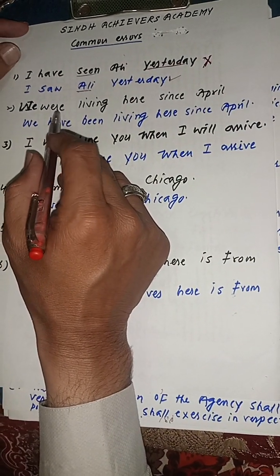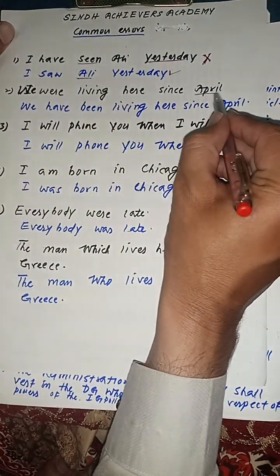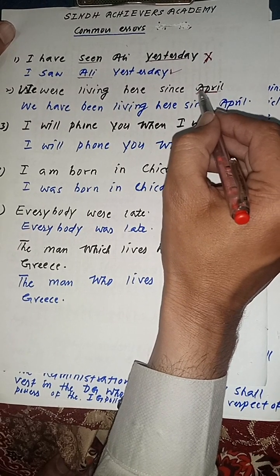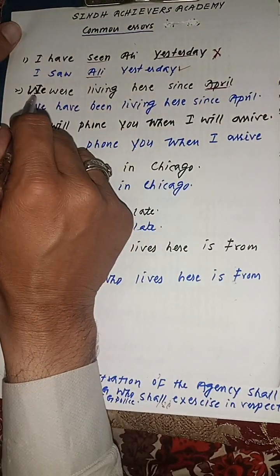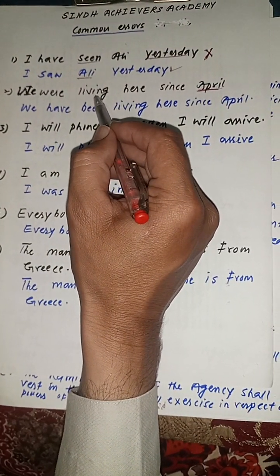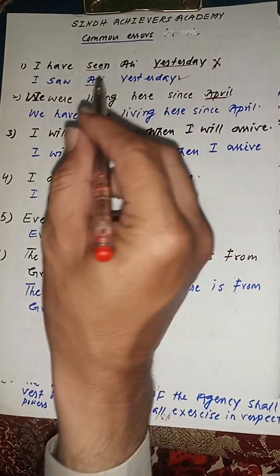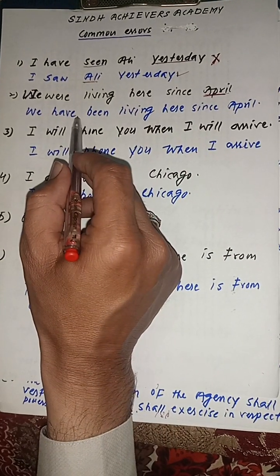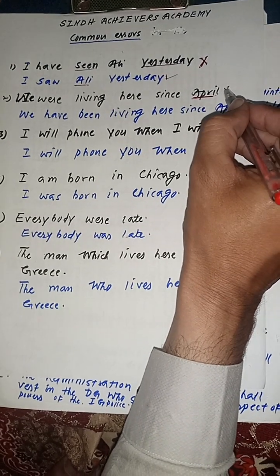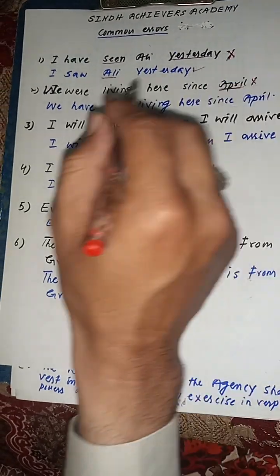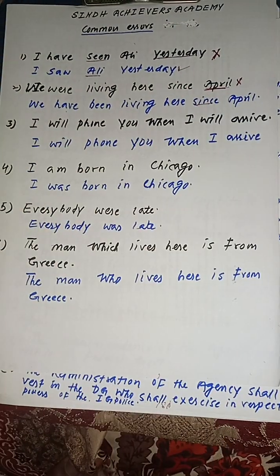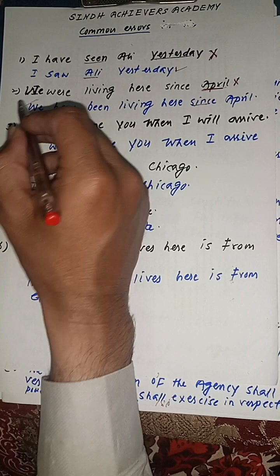We have another example: 'We were living here since April.' This is a grammatically correct sentence.